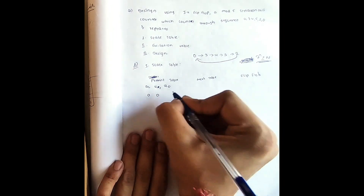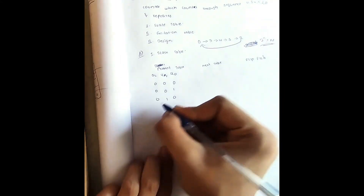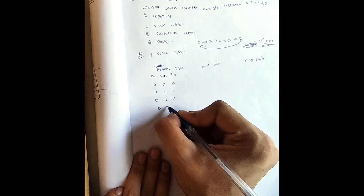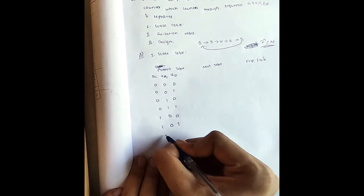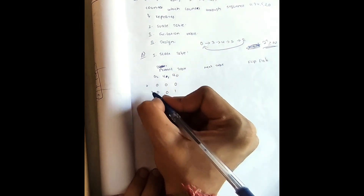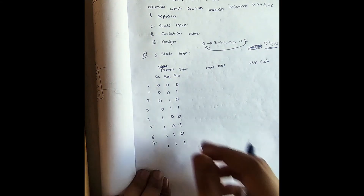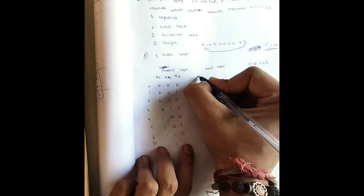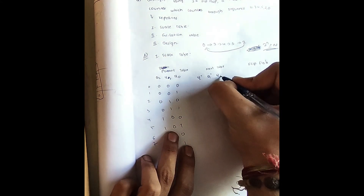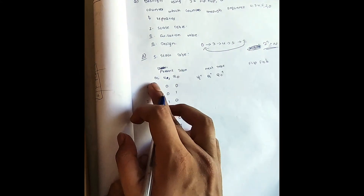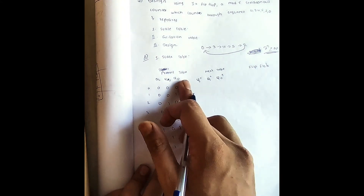Let me take the different combinations for the truth table: 0 0 0, 0 0 1, 0 1 0, 0 1 1, 1 0 0, 1 0 1, 1 1 0, 1 1 1 — giving values 0 through 7. In the next state columns we will write Q2+, Q1+, and Q0+.